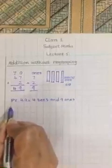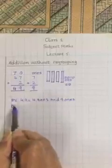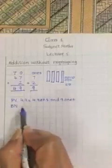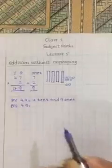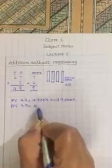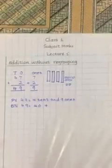Next BN. BN means break the numbers. Answer 49. So there are 4 tenths. 1, 2, 3, 4. So 4 tenths mean 40. 40 plus 9. 1, 2, 3, 4, 5, 6, 7, 8, 9 ones.